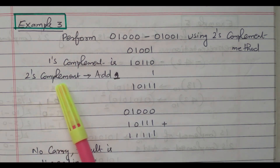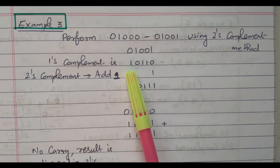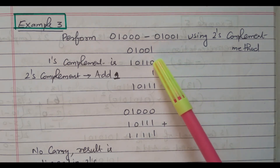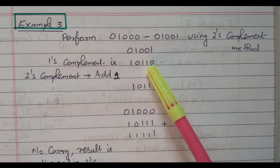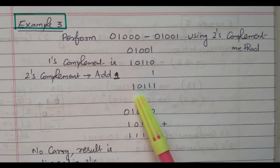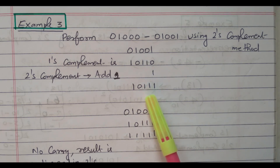How to get the 2's complement? Add 1 with the 1's complement number — so that will give the 2's complement. We need to add 1, so 0 plus 1 is 1; then other values remain as they are: 1, 1, 0, 1. So the 2's complement of the second number is 10111.